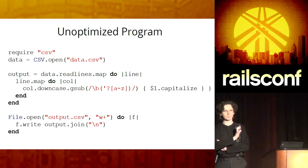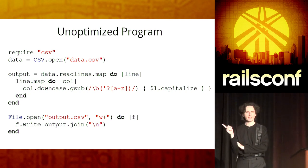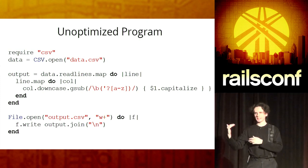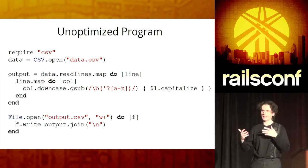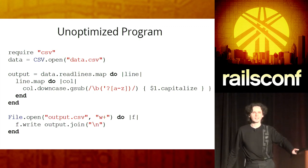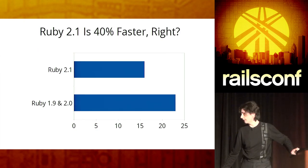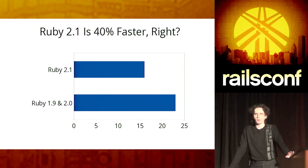Let me show you a synthetic but still pretty good example of how memory optimization works and why it helps. This is the simple program that reads CSV — a pretty large CSV, actually. It reads it line by line, converts strings from uppercase to title case, and then outputs it. It's not memory optimized. It needs a lot of memory to load the data set, to parse it, to do string operations, and to collect the output. With Ruby 1.9 and 2.0 it takes about 20-something seconds to finish. Ruby 2.1 gives you that 40 percent improvement.